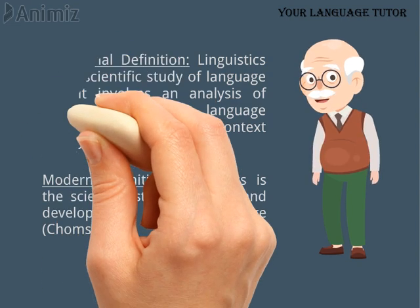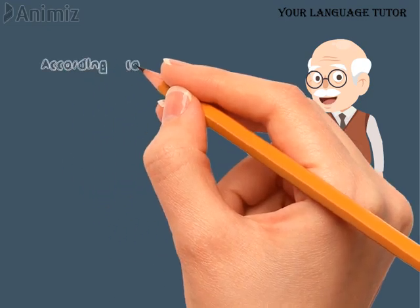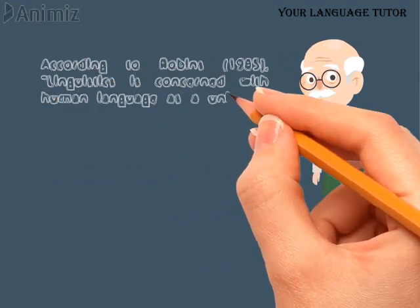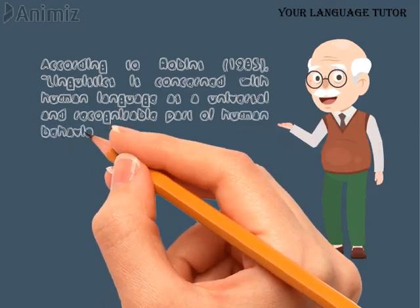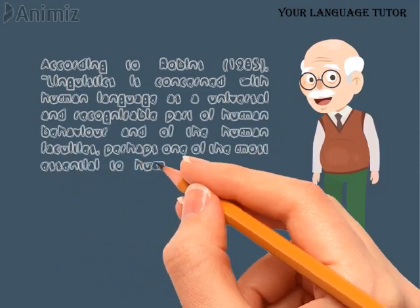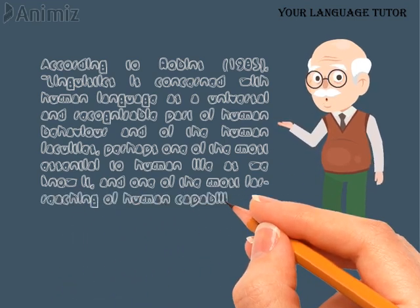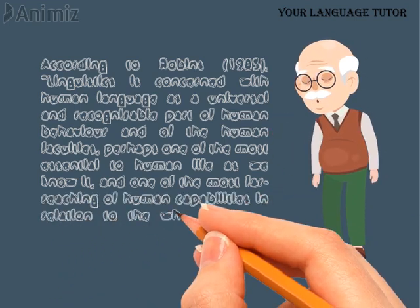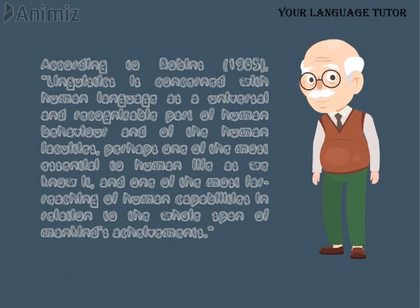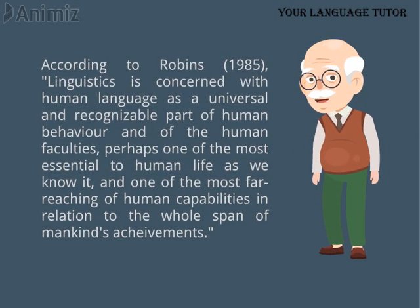Now we will look at what Robins says about Linguistics. According to Robins (1985): 'Linguistics is concerned with human language as a universal and recognizable part of human behavior and of human faculties — perhaps one of the most essential of human life as we know it, and one of the most far-reaching of human capabilities in relation to the whole span of mankind's achievements.'